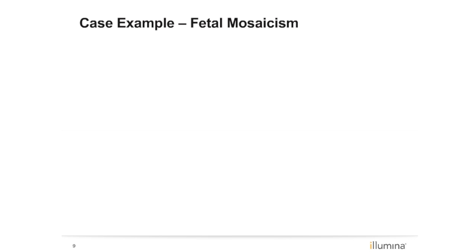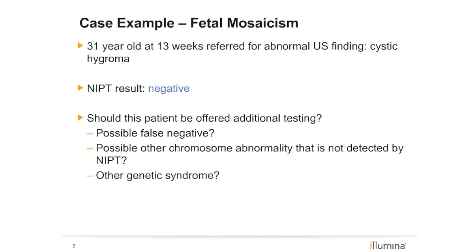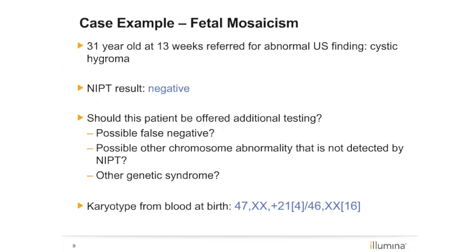This next case illustrates how fetal mosaicism can also affect NIPT results. A 31-year-old patient with an abnormal ultrasound had a normal NIPT result. Practice guidelines indicate that any patient with an abnormal ultrasound finding should be offered invasive diagnostic testing. Cystic hygroma can be seen in genetic conditions other than aneuploidy, which are not screened for with NIPT. Diagnostic testing was performed following birth, and the infant was detected to have mosaic Down syndrome. Depending on the level of mosaicism present, NIPT may not detect mosaic aneuploidy.